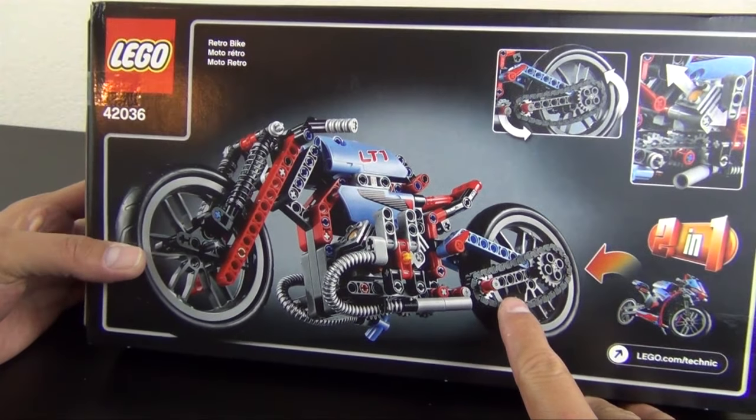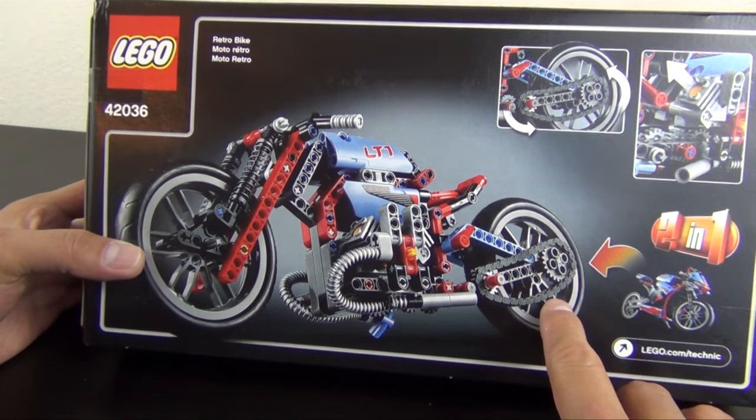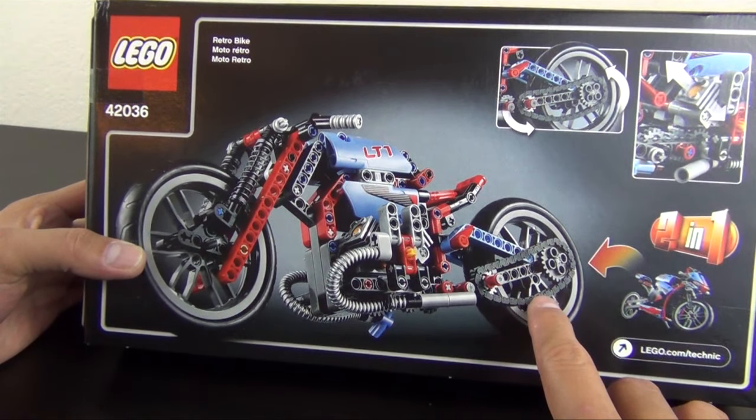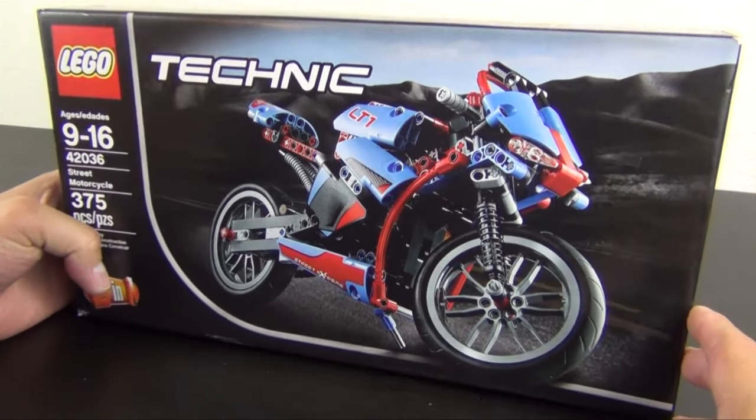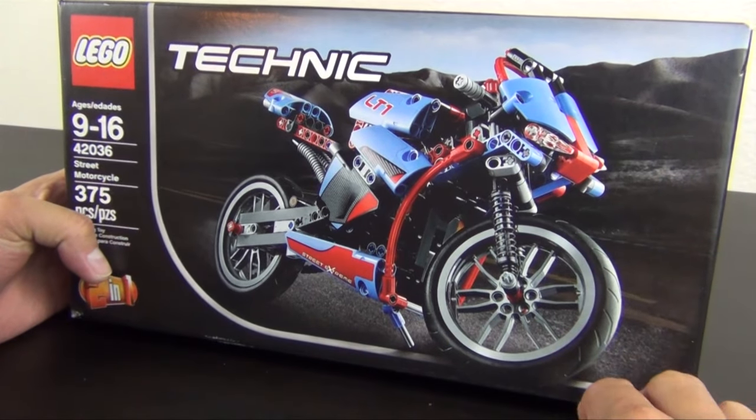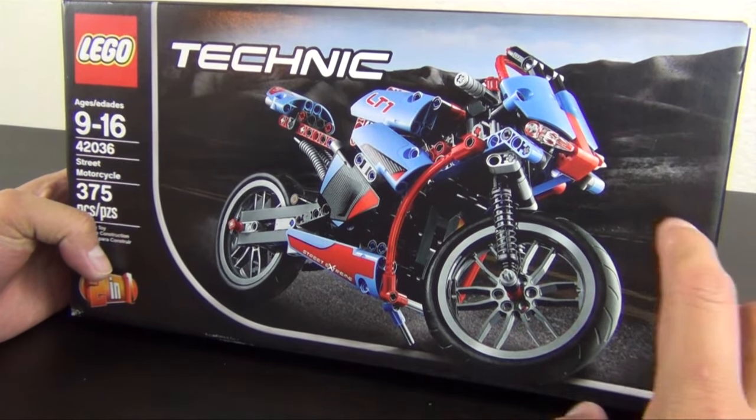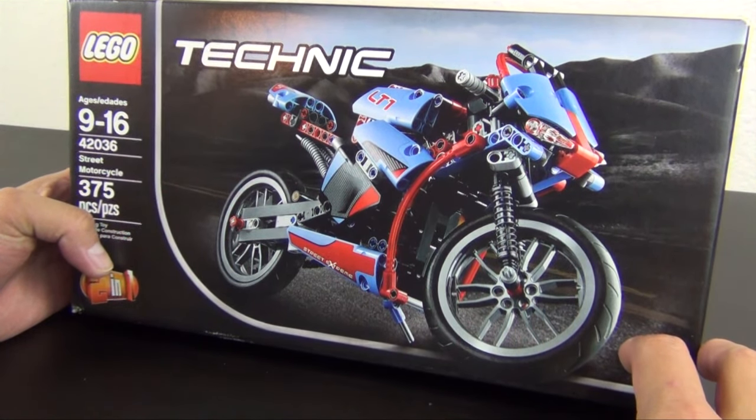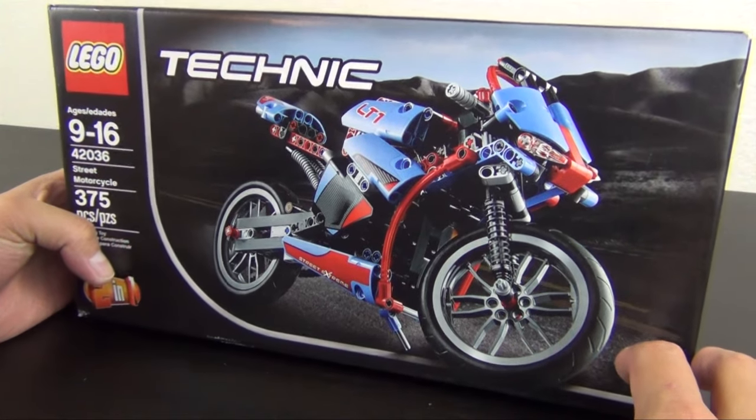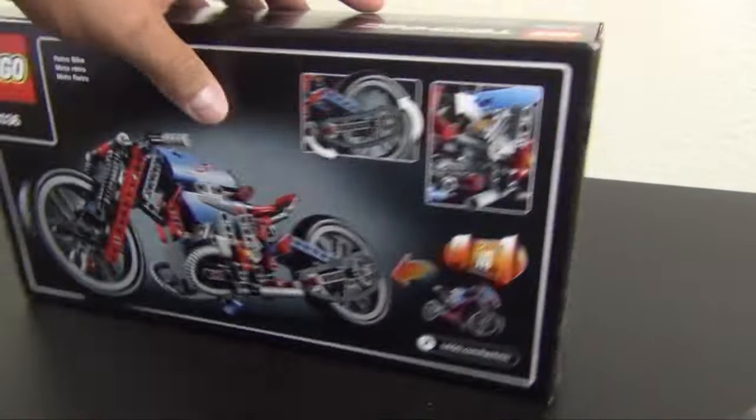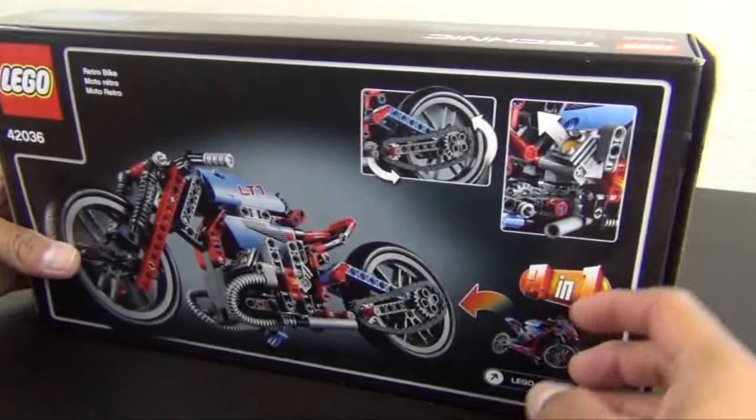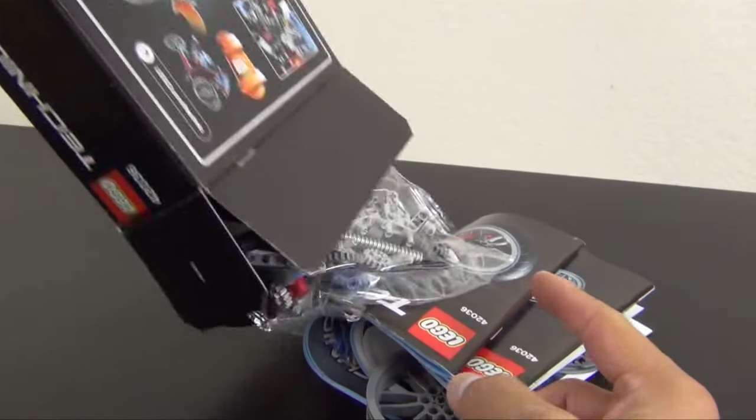Similar to the one they did previously, it does come with an alternate build to do more of like a roadster or what they call a retro bike. Just judging by the picture on the box, this isn't really gonna be as good as the other one. I really liked the one they did previously, so I don't know how they could necessarily improve it. Let's get into the build and figure it out. Maybe it'll prove me wrong.